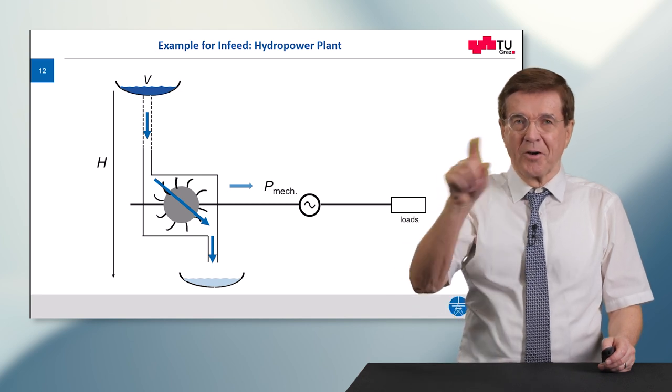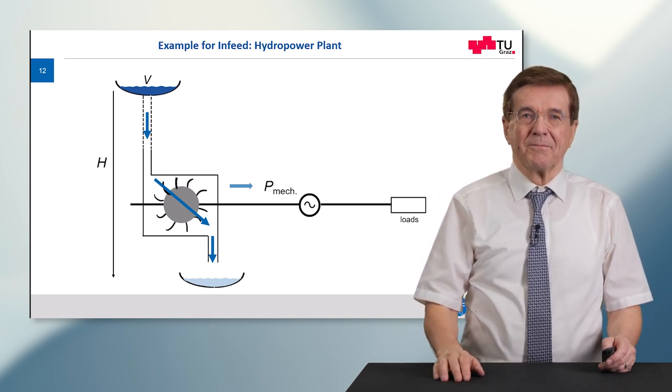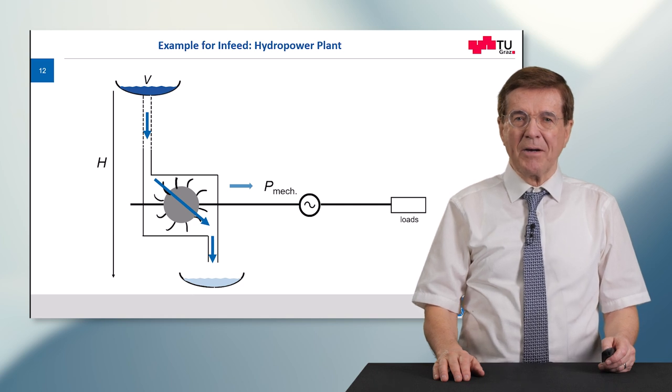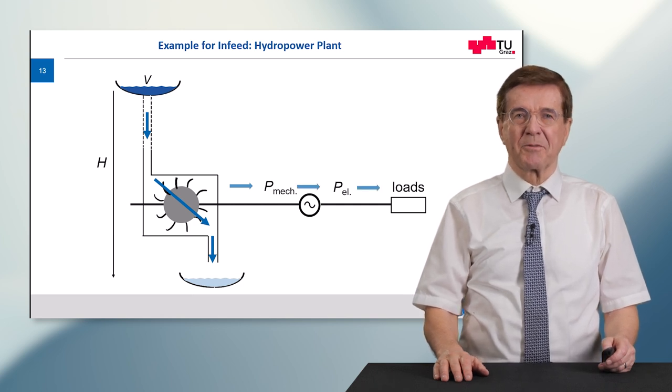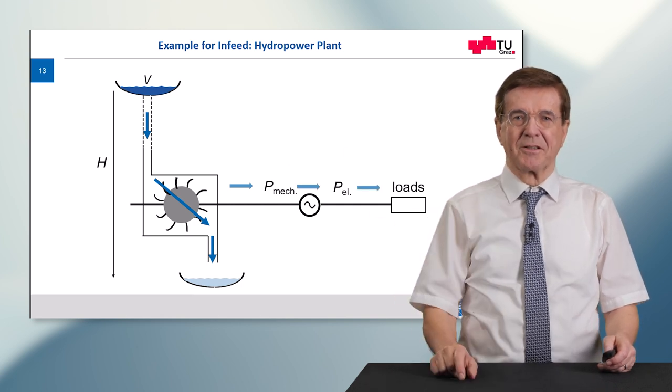While it turns the turbine, it produces mechanical power which is converted into electrical power and that is passed on to the electrical loads.